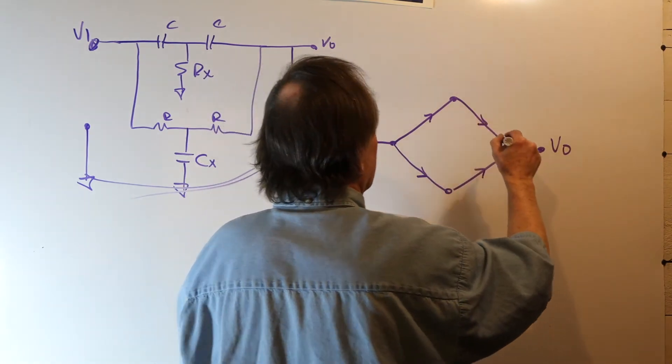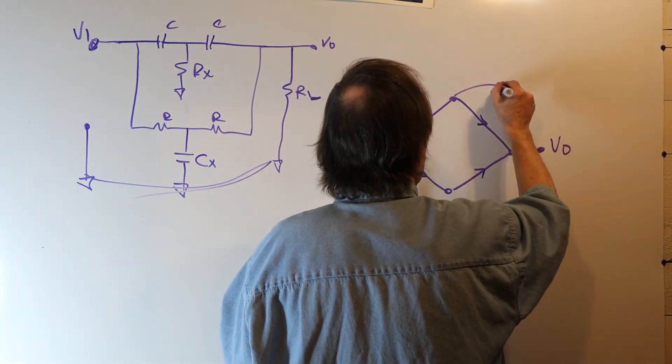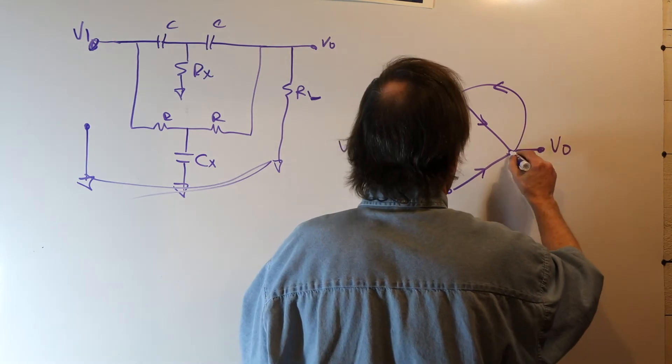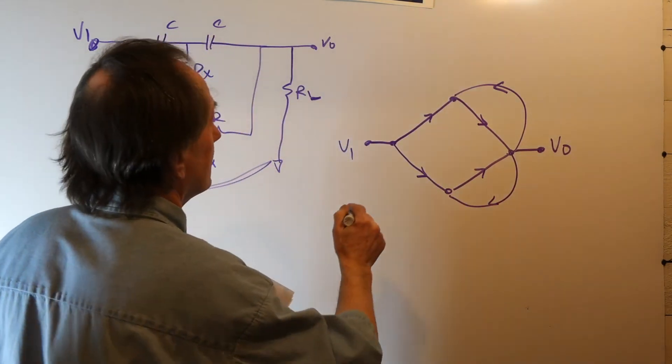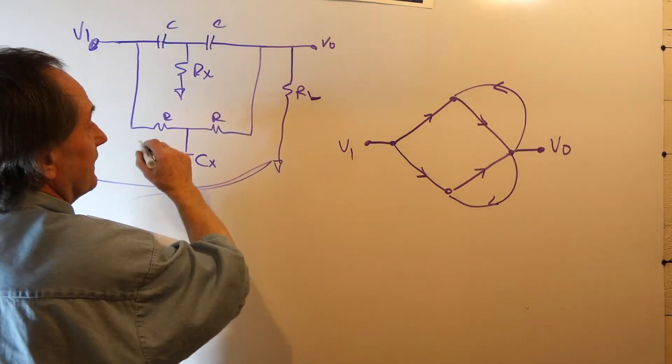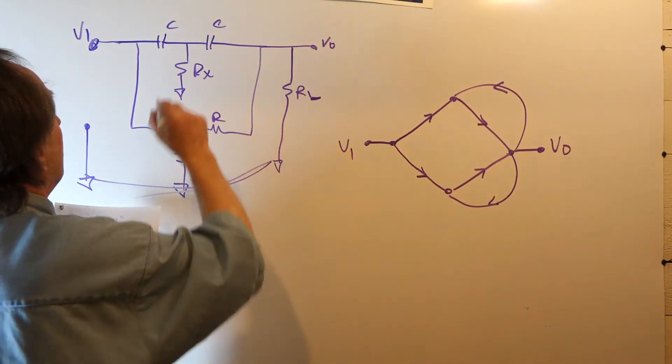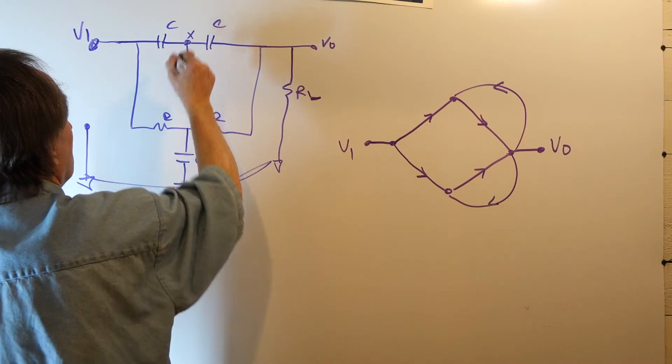These are our gain paths. We have two feedback paths from Vout.